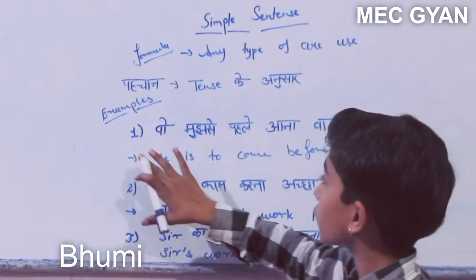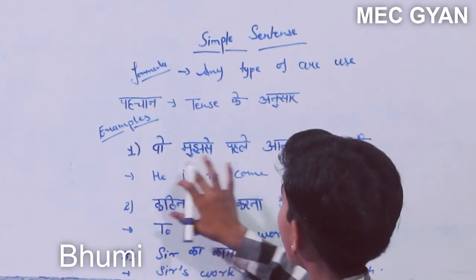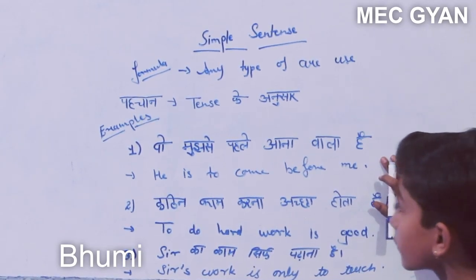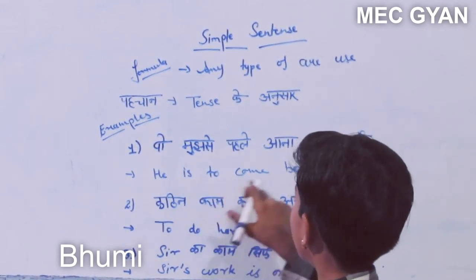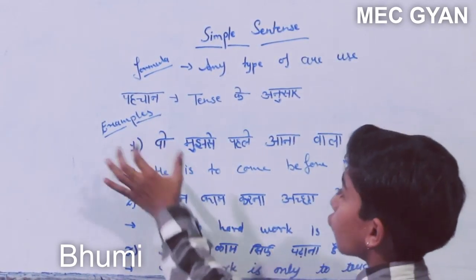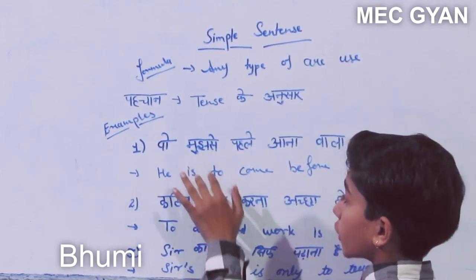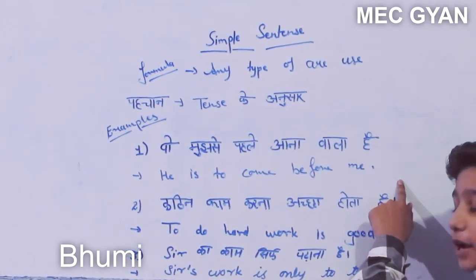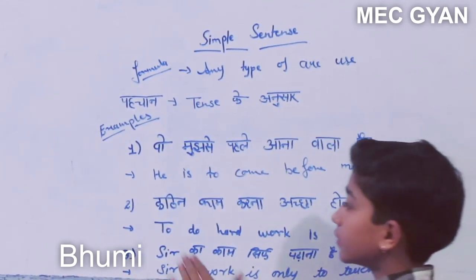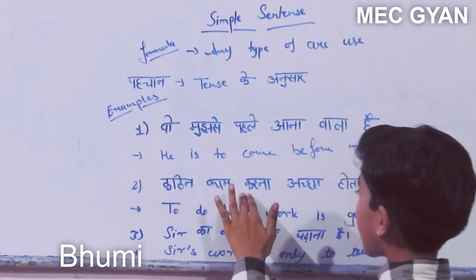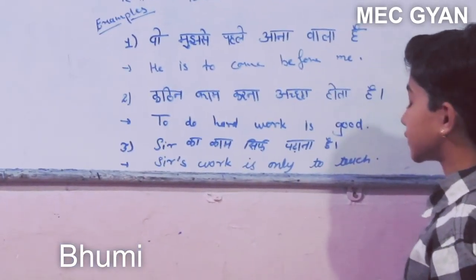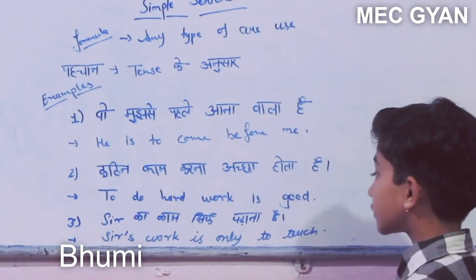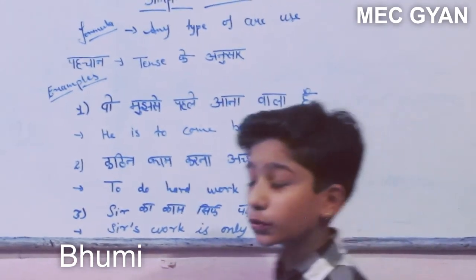For example: 'He is to come before me.' This is a model sentence with one subject. Another example: 'To do hard work is good.' These are examples of simple sentences.